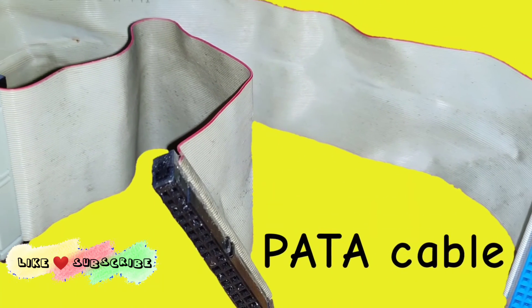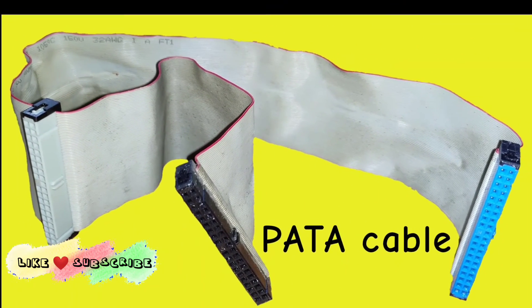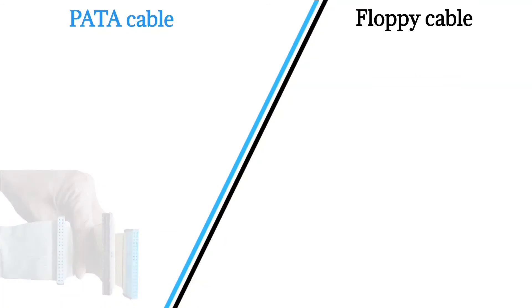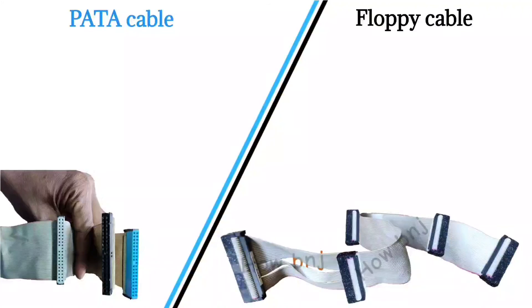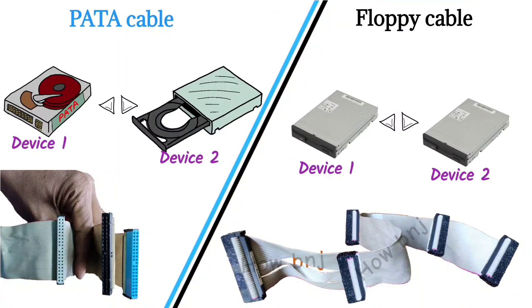While one PATA cable can have a maximum of three connectors, one floppy cable may have a maximum of five connectors. But each of them can support only up to two drives at a time.